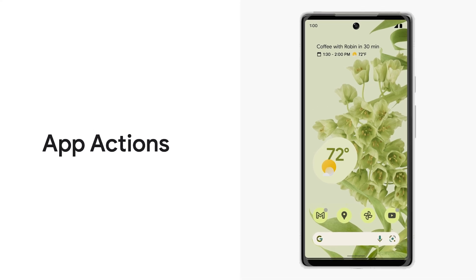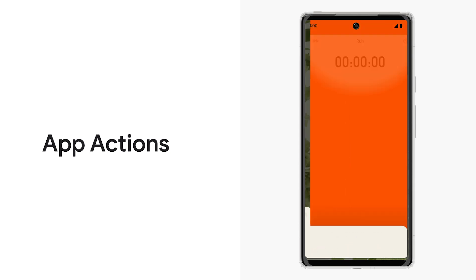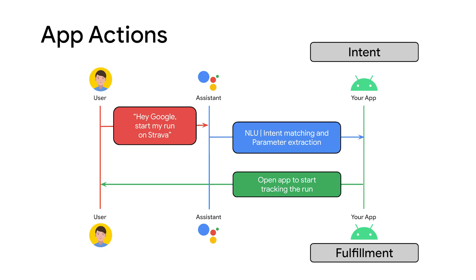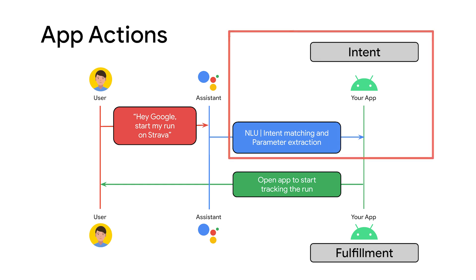App Actions is the framework that enables you to voiceify your Android apps. With App Actions, users say simple voice commands to quickly access your app's functionality using Google Assistant intent mapping and NLU. To implement App Actions, you need to do two things: one, specify which user intents your app supports; and two, specify how your app can fulfill these intents.